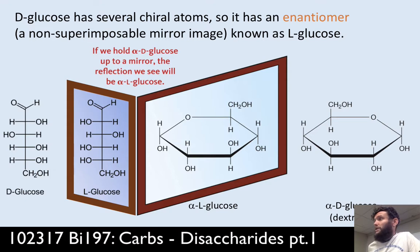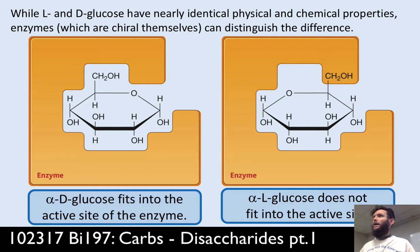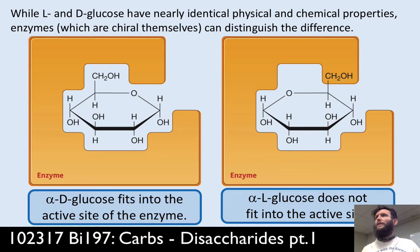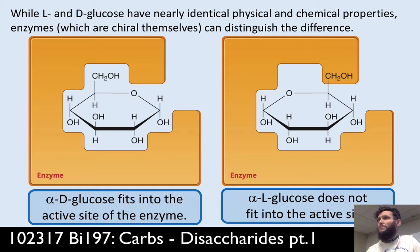Many of you tasted dextrose in the lab — the powder. One of the implications is that although L and D-glucose have the same melting point, the same boiling point, the same freezing point depression, the same solubility in water — they have virtually identical physical and chemical properties. Outside of looking at their optical activity, you would have a very hard time determining the difference between them based solely upon their physical or chemical properties.